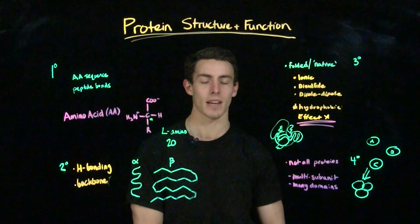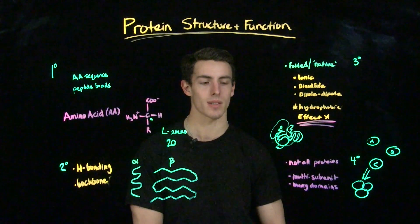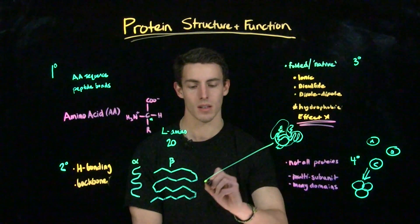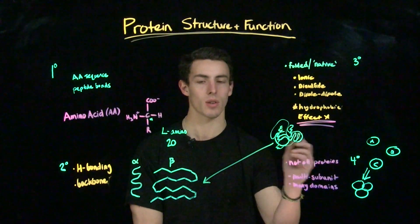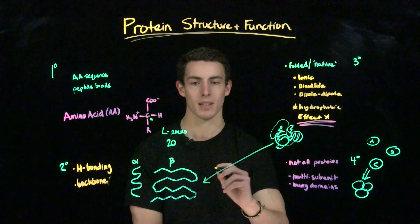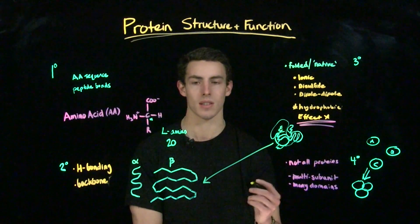The last thing we're going to talk about is denaturation. Denaturation is the unfolding of a protein due to conditions such as heat, salt, or pH imbalance. Generally, when we think of denaturation, we think of a tertiary or quaternary protein returning back to its secondary structure. Thus, it unfolds.